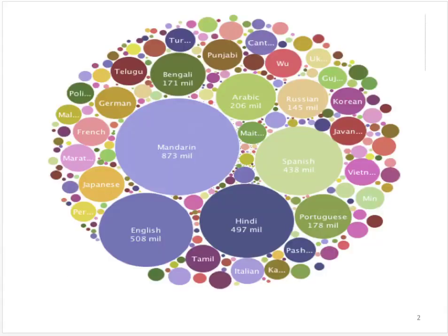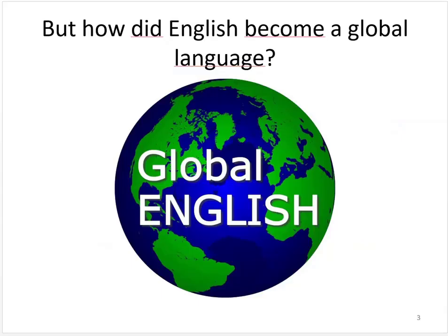English is now a global language, spoken by over 500 million native speakers, but it's also widely used for communication in business, science, technology, and politics by millions of other speakers as a common lingua franca, or a language that everyone understands. So how did this happen?